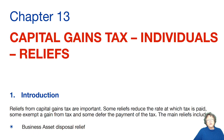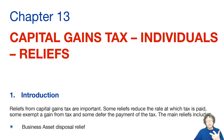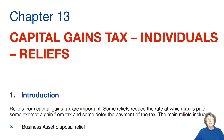In this chapter, we're going to look at capital gains tax reliefs for individuals. Because capital gains tax has been simplified to some extent — i.e. proceeds minus cost equals gain — you will find a lot of reliefs in your TX exam. We're going to look at the main ones; they won't all be tested. Some come up more than others, but you need to be aware of all of them. It is a very important chapter.